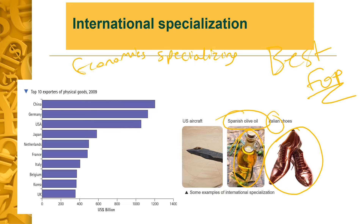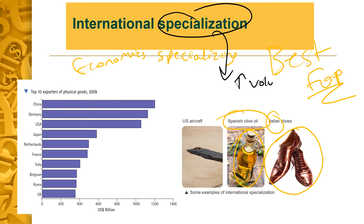Specialization — why is it important in an economy? It is important because it allows an economy to produce a greater volume of their goods and services more efficiently. This is the most important thing. It therefore increases output, incomes, and living standards in an economy. Economies then trade with each other to obtain the other goods and services that they need and want.